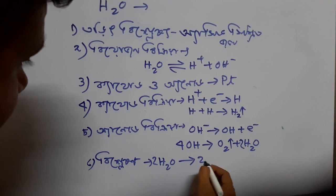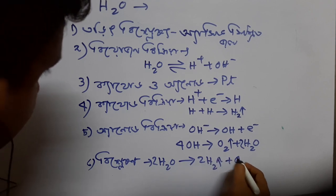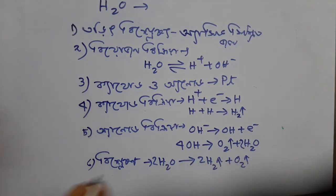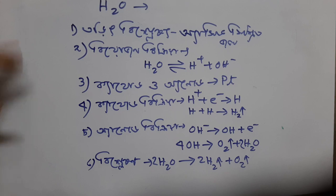H2O is split at the cathode producing hydrogen gas and at the anode producing oxygen gas. This is the best solution for the first solution. We will write the question in this way.